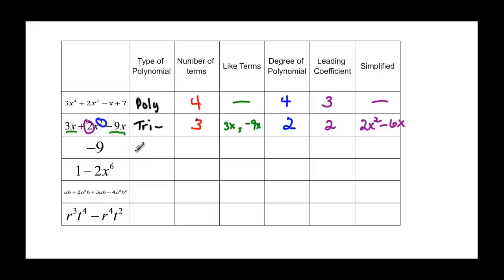This one is what we call a monomial. Mono means one, so it's a monomial with one term. There are no like terms since I only have one. The degree on this polynomial is zero. The leading coefficient is that constant value we see there, so it's negative nine. There's no simplifying to be done because there were no like terms.